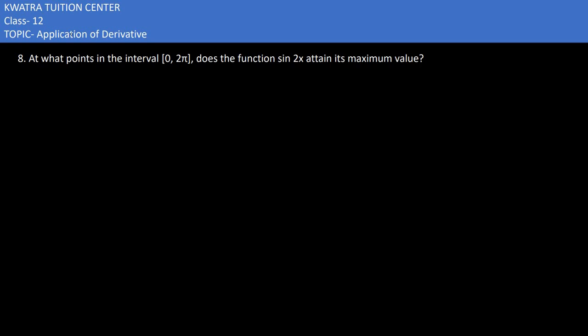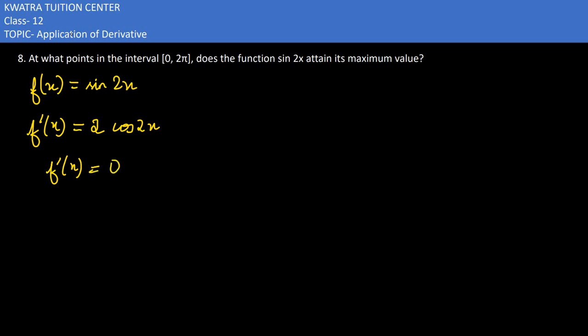In question 8, it asks: at what points in the interval 0 to 2π does the function sin(2x) attain its maximum value? We have the function f(x) = sin(2x), where x belongs to [0, 2π]. First, we take the derivative: f'(x) = 2cos(2x), and we set it equal to 0.